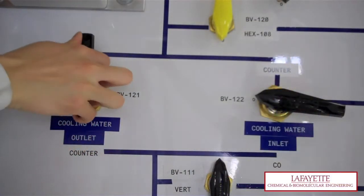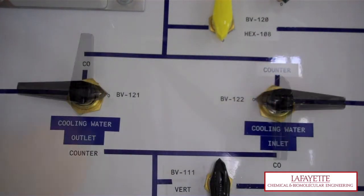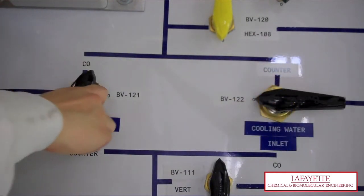On the back panel, adjust BV121 and BV122 to a counter-current or co-current flow configuration for the column condensers.